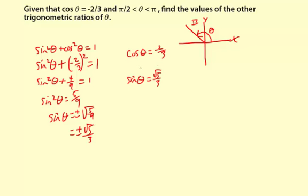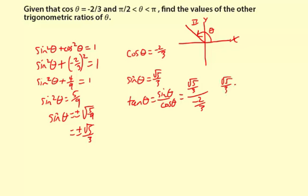Using the tangent identity, the tangent of theta is sine of theta divided by cosine of theta, and we already know both of those. So it's going to be square root of five over three divided by negative two-thirds. Taking the reciprocal and multiplying: square root of five over three times negative three over two. The threes simplify out, giving negative square root of five over two. That's the tangent of theta.